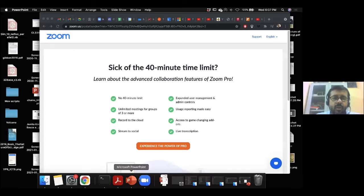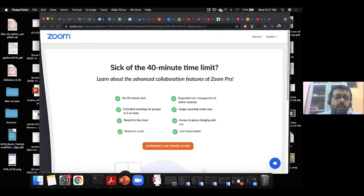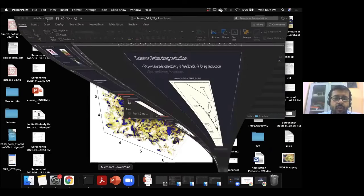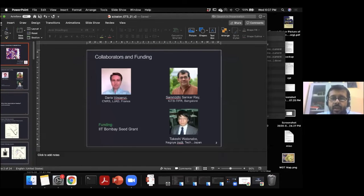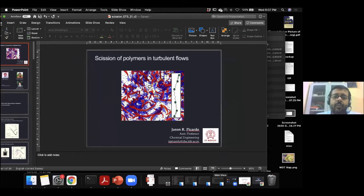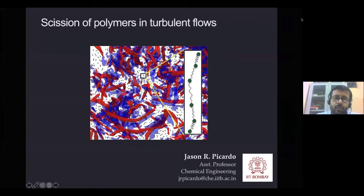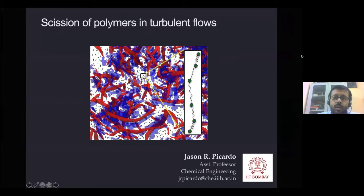We are having Jason — I'd like to introduce today's speaker. Professor Jason Picardo is a faculty member in the chemical engineering department, my colleague who also works on turbulence. He did his PhD at IIT Madras with Professor Pushman, and after that he was a postdoc at ICTS where he worked with Professor Rama and Samri. His interest areas are instabilities, pattern formation, Dublin transport, and polymers, about which he will talk today.